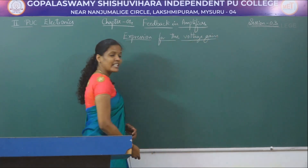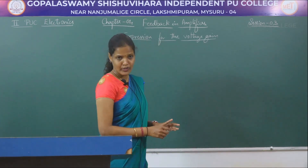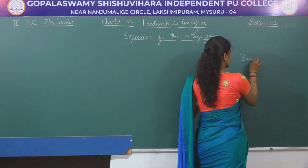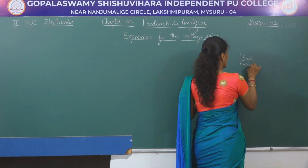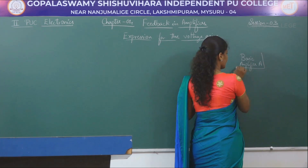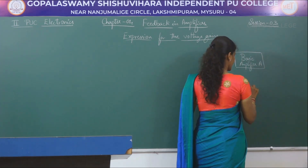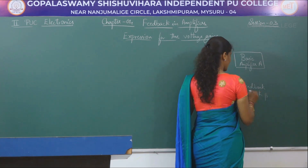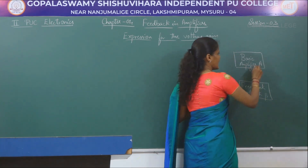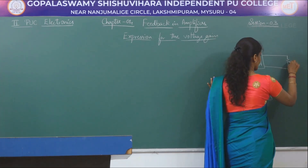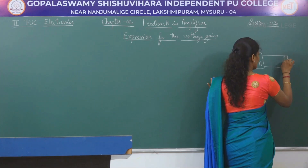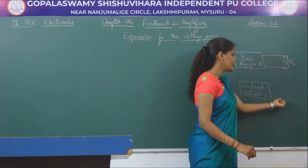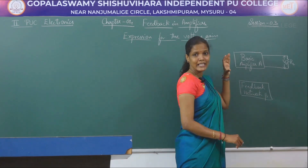In order to derive an expression for the voltage gain, we are going to use a voltage series negative feedback circuit. To draw that circuit, we need a basic amplifier having a gain of A and a feedback network having a gain of beta. At the output side, we will have RL, that is the load resistor, and the voltage across that load resistor will be denoted by V0.